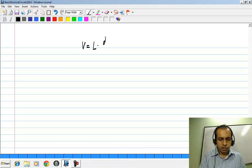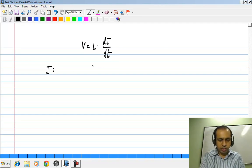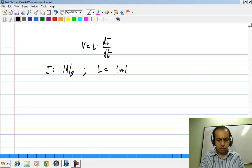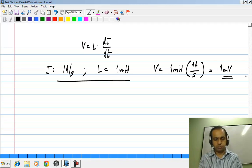What does this say? V is L times di by dt, and if I is changing at let us say 1 ampere per second, and if the inductance is 1 millihenry, clearly voltage induced across it is 1 millihenry times 1 ampere per second, which is 1 millivolt. The voltage across the inductor is 1 millivolt.